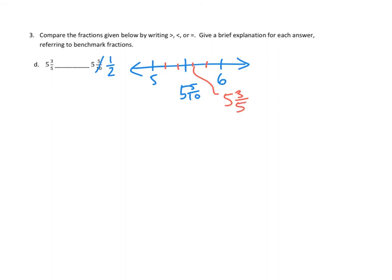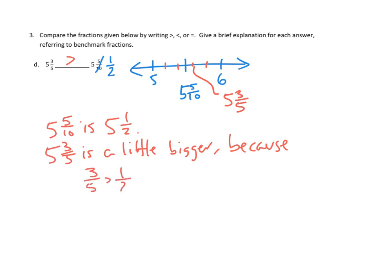And that makes sense to me. It would be bigger than a half because, after all, 3 fifths is bigger than a half, right? To have 3 fifths of a pizza is to have a little bit more than a half of a pizza. So I think we've determined that 5 and 3 fifths is a little bigger than 5 and 5 tenths or 5 and 1 half. And that would be, my explanation could be the drawing, or I could just say that 5 and 5 tenths is 5 and 1 half. 5 and 3 fifths is a little bigger because 3 fifths is greater than 1 half. Excellent.